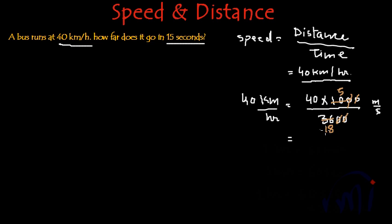And 2 times 9 is 18, 2 times 2 is 4, and 0. So this is 100 by 9 meters per second. So 100 by 9 is the distance traveled in 1 second.